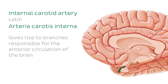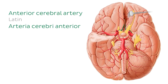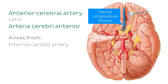The first branch of the internal carotid we'll look at today is the anterior cerebral artery. The anterior cerebral artery arises from the internal carotid artery at the anterior perforated substance, which I've marked for you with a blue cross on your screen. It then passes anteriorly above the optic chiasm into the medial longitudinal fissure.